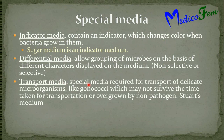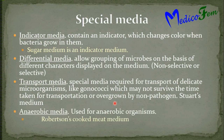Transport media are special media required for the transport of delicate organisms like gonococci. Gonococci do not survive for the time taken in transportation of the specimen, or there may be overgrowth of non-pathogenic organisms. Stuart medium is a transport medium. Anaerobic medium is used for anaerobic organisms. Robertson cooked meat medium is an anaerobic medium.